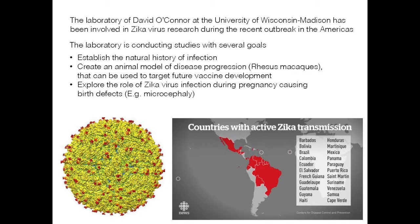The laboratory is conducting studies with a number of primary goals. One is to establish the natural history of the infection. Second is to create an animal model of disease progression using rhesus macaques housed at the Wisconsin National Primate Research Center, to characterize the viral dynamics as infection happens — monitoring animals sequentially in ways you just couldn't do in a human. We also want to explore the role of Zika virus infection during pregnancy causing birth defects, as the rhesus macaque model is well suited to infecting pregnant animals where you could never do that to a human.